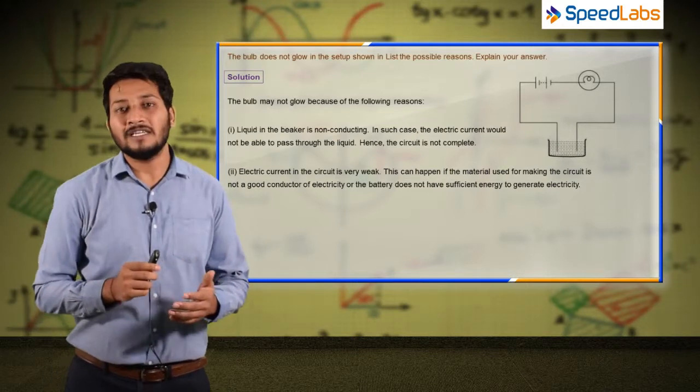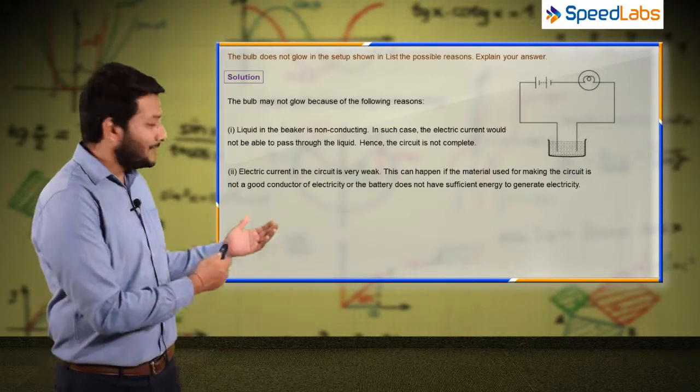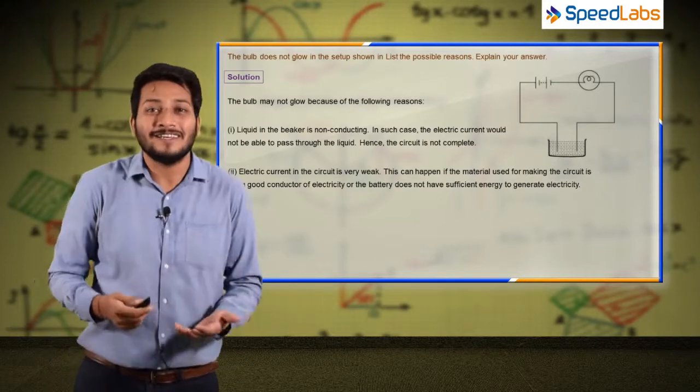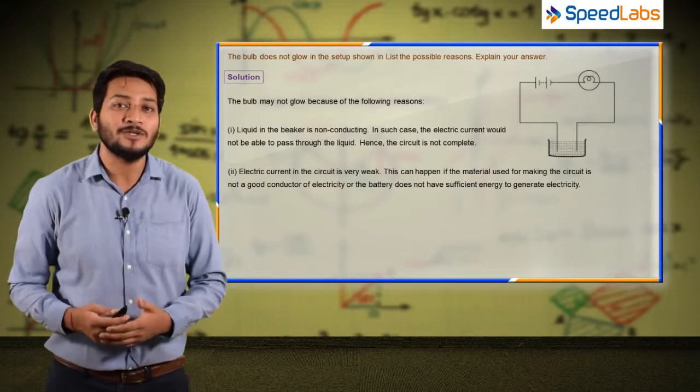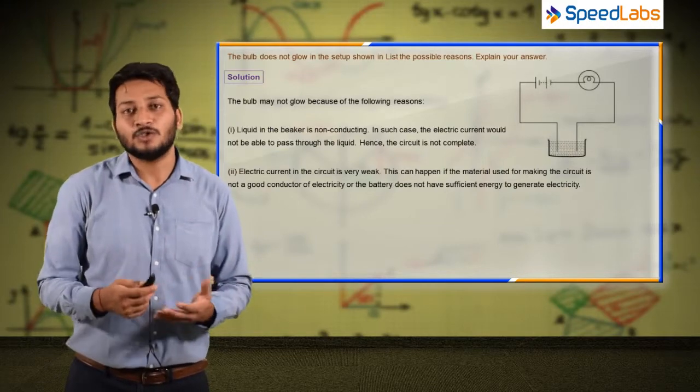So these are two possible reasons. A third reason could be that the bulb itself is faulty. But obviously, we are not interested in that reason because we are doing experiments, so we will use a good bulb which should work.